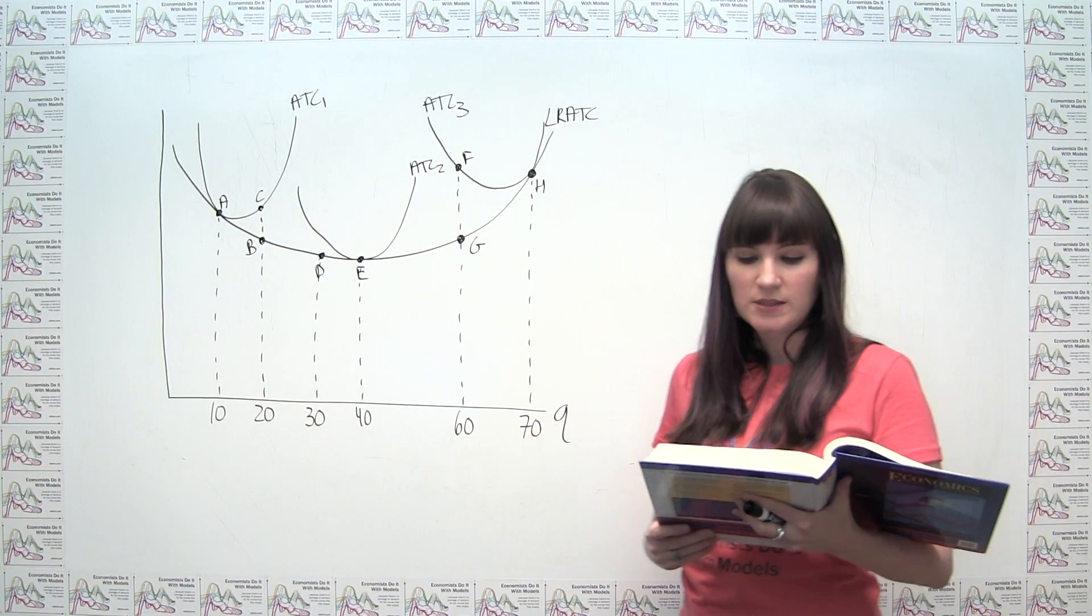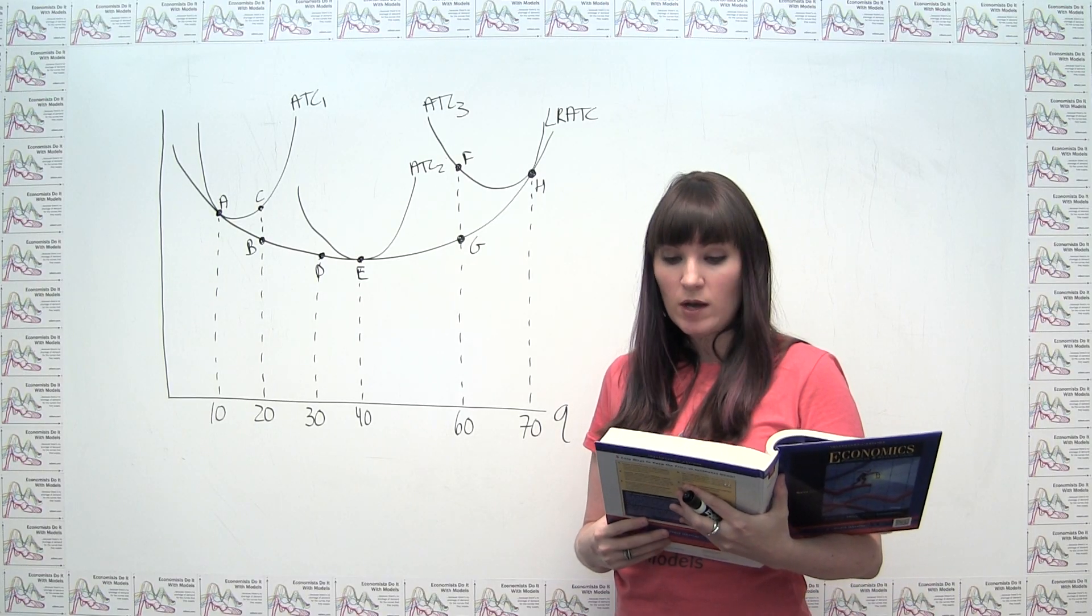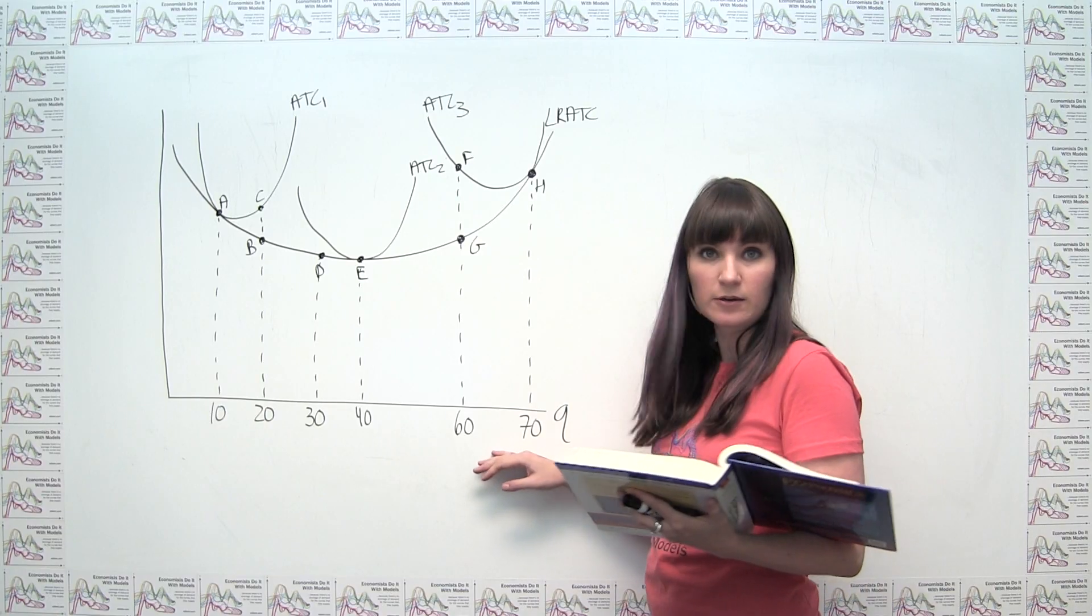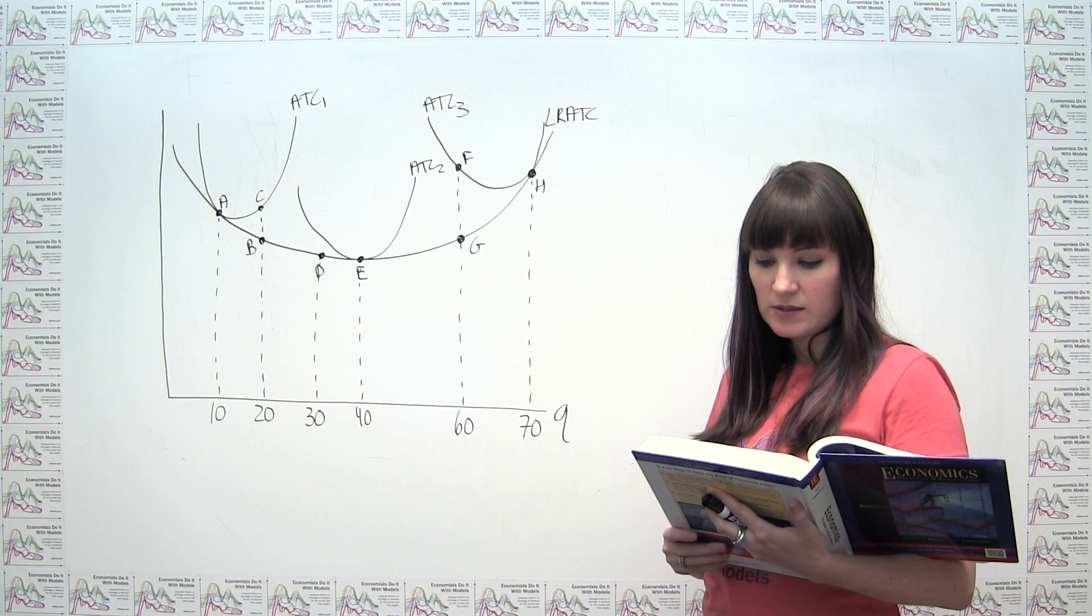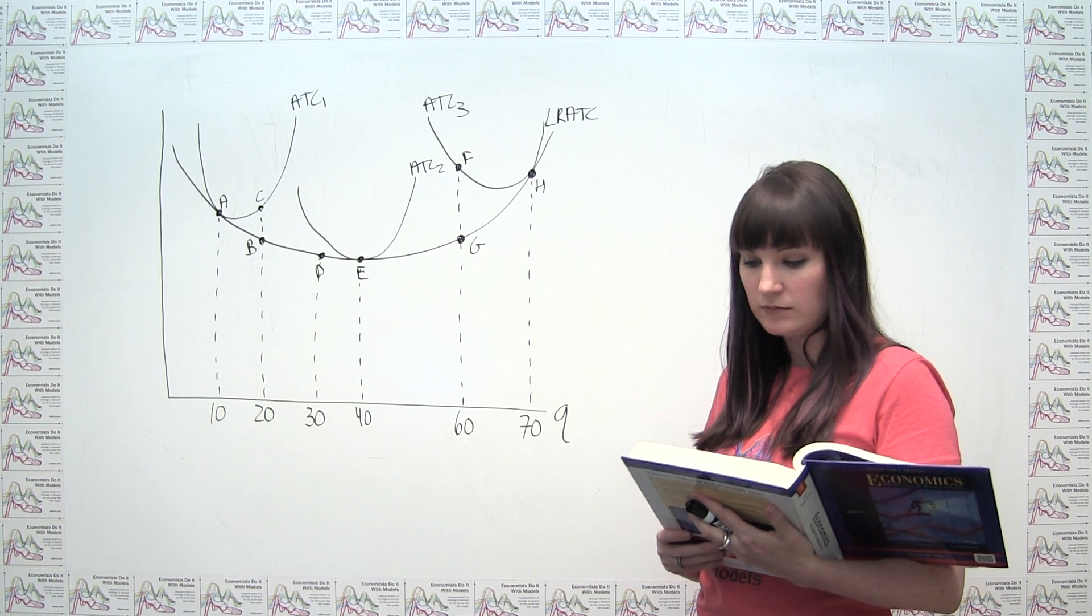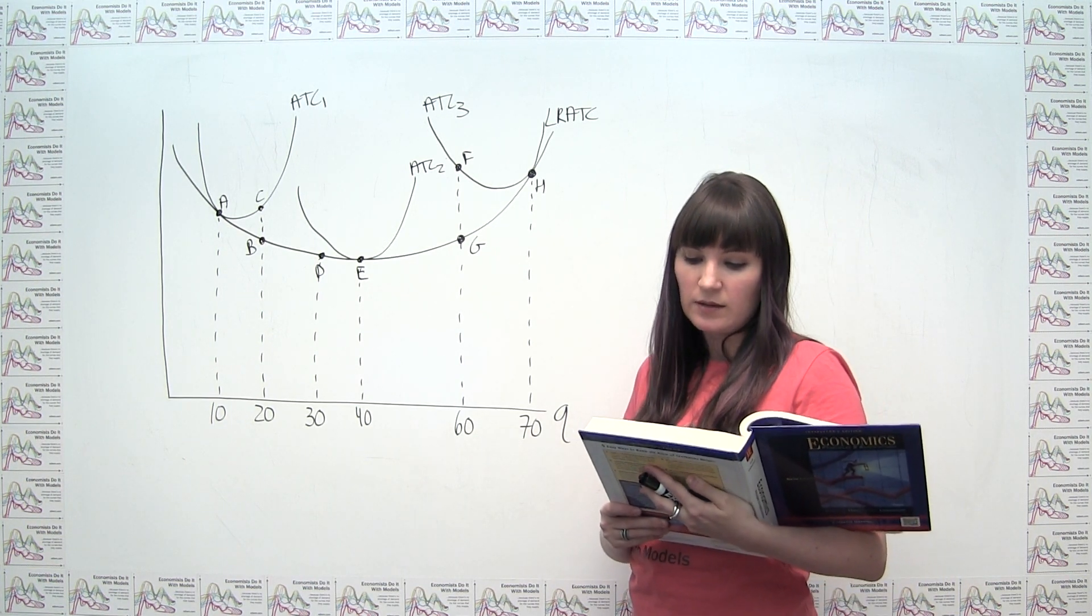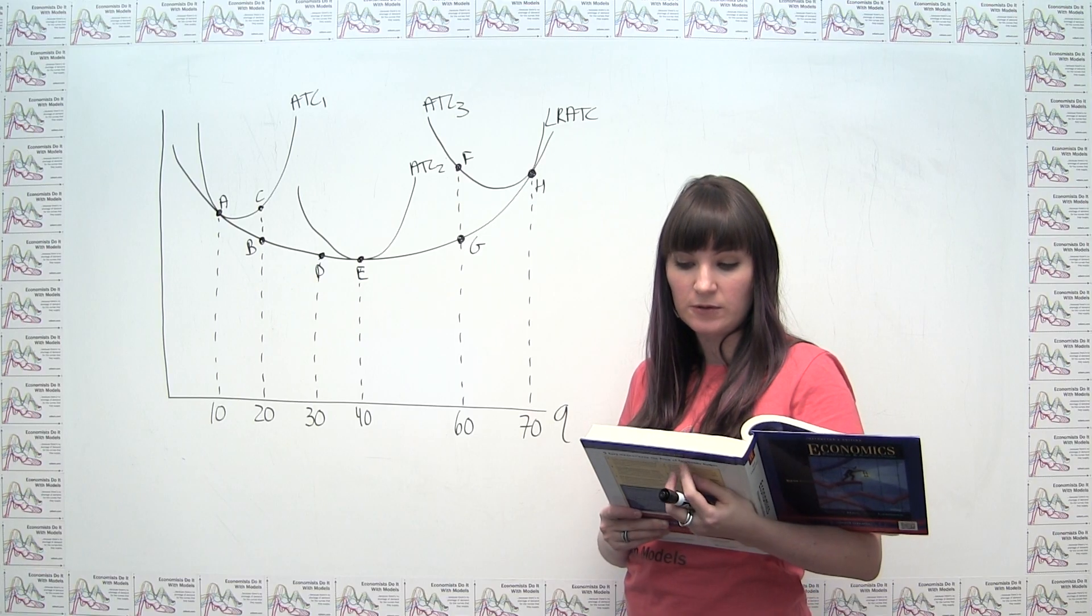Part C of the question says, eventually, Ludmila and company do very well, expanding until they find themselves making 70 schnitzels a day. So eventually, they're all the way out here. But after a few years, Ludmila discovers that profit was greater when she produced 20 schnitzels per day. So she wants to scale back production to 20 schnitzels per day, laying off workers, selling off equipment, renting less space, and producing fewer schnitzels.